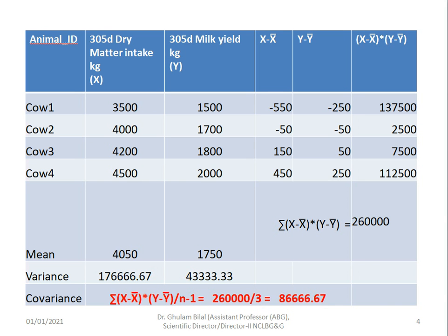This table shows us how to calculate covariance. We have four cows and we have recorded their 35-day dry matter intake, denoted by x, and their 35-day milk yield, denoted by y.